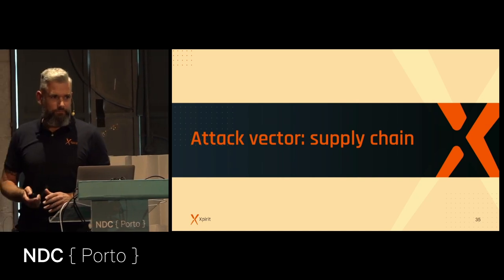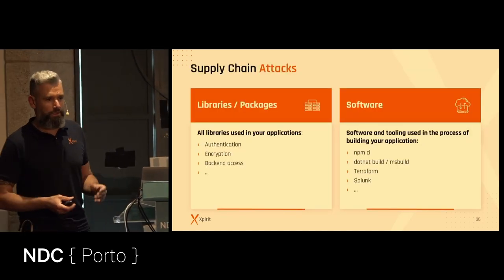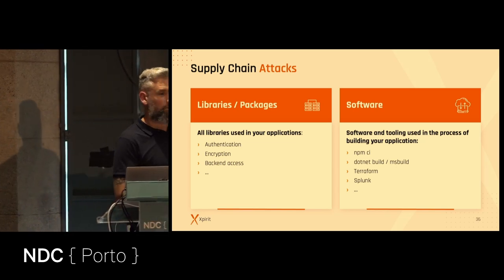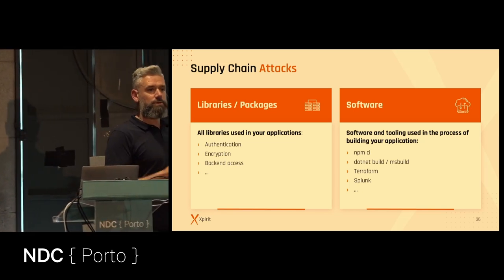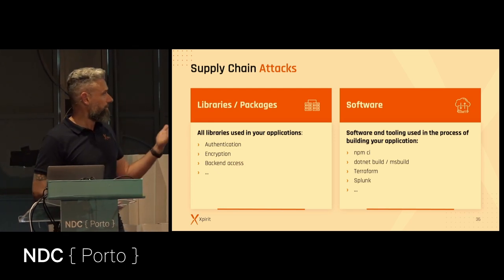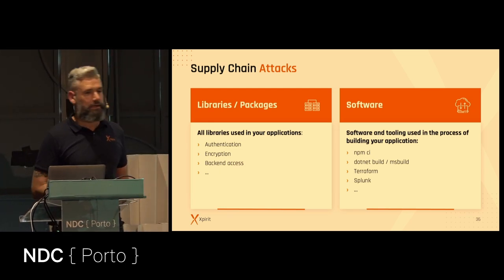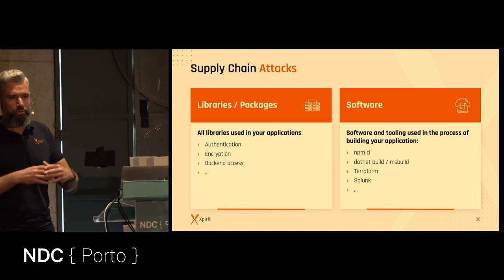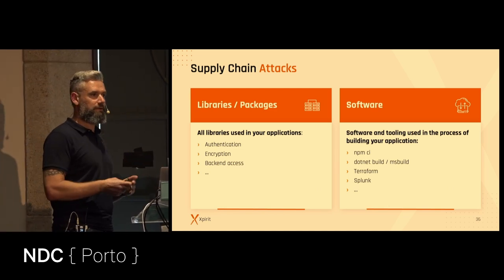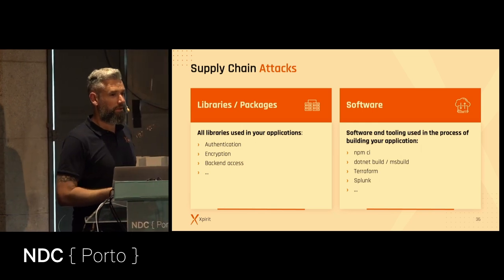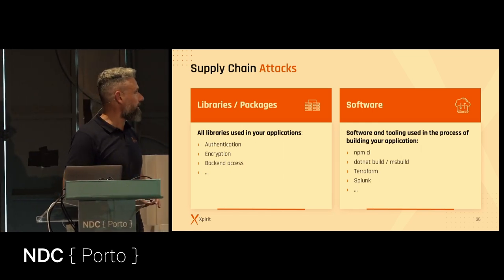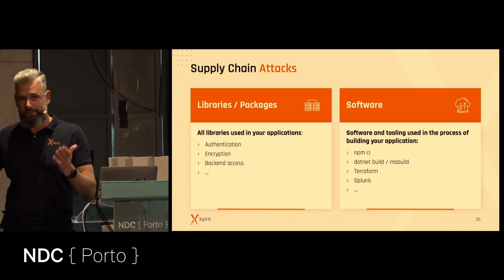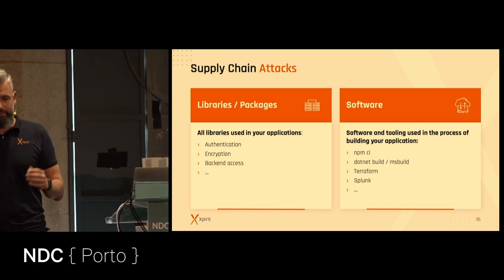Attack vector: supply chain. Your supply chain is not only your packages — it's also all the software you use to build your software: NPM, CI, .NET CLI, Terraform, and all the other tools in your build system. All tools involved in building your software are also part of the supply chain, and then of course your deep dependency tree — all the libraries you depend upon and the libraries they depend upon, and so on.